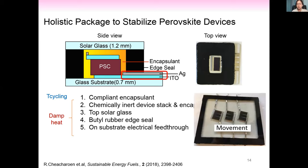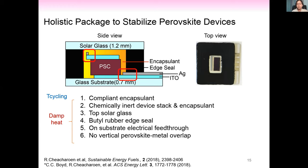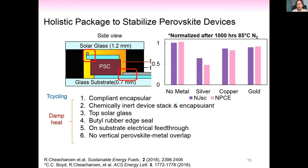Q&A: What is the perovskite thickness and does thickness affect mechanical stability? The perovskite thickness used is 500 nanometers. Testing with different perovskite thicknesses together with the Dauskite group at Stanford showed that the mechanical weakness comes from the PCBM layer rather than from the perovskite layer itself.